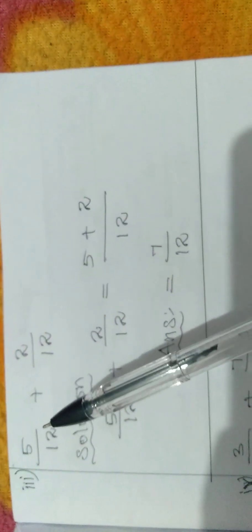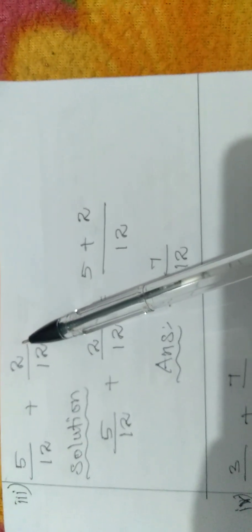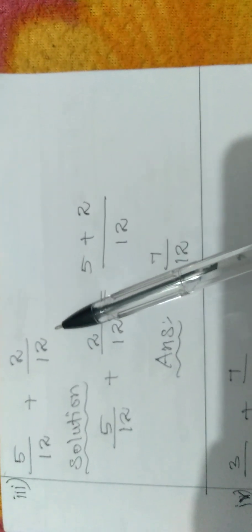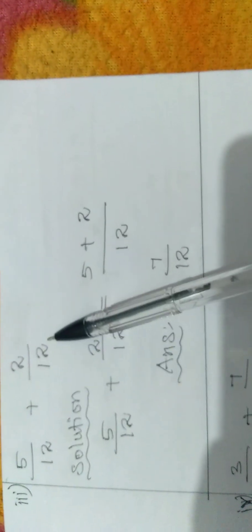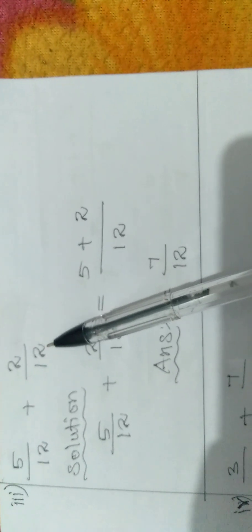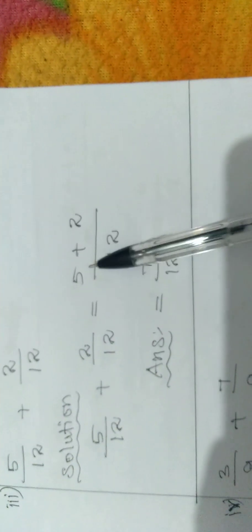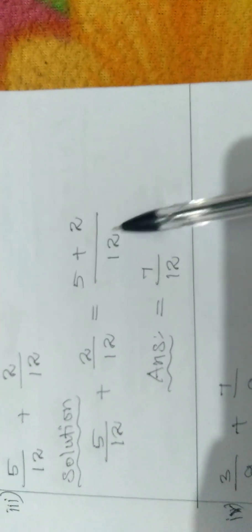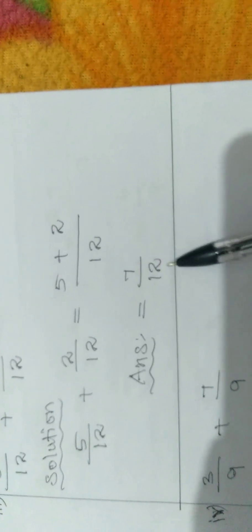Fraction 5 by 12 plus fraction 2 by 12. The denominators are the same, so we can add only the numerators: 5 plus 2 by 12. The answer is 7 by 12.